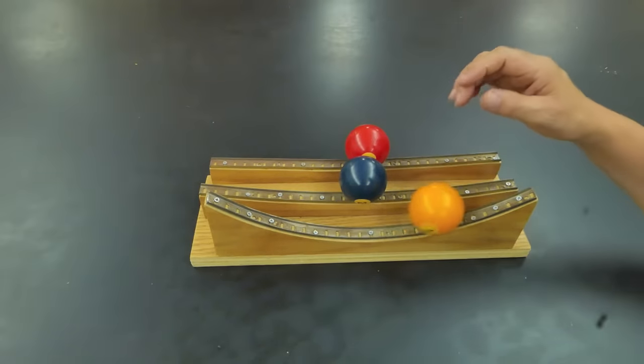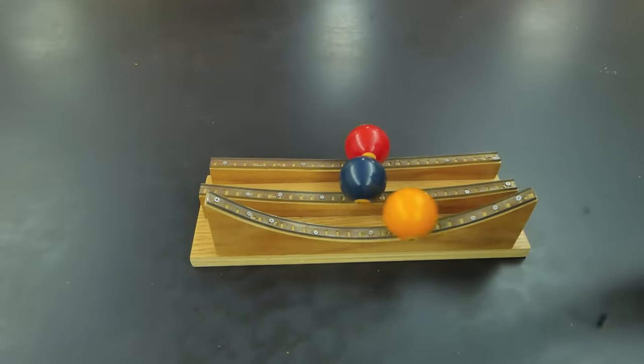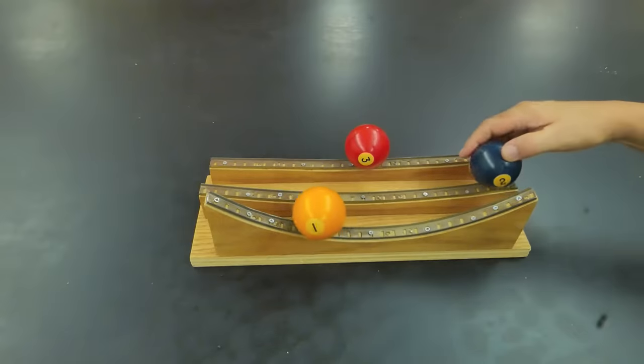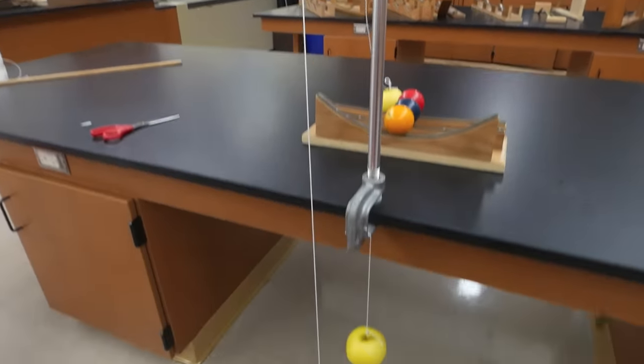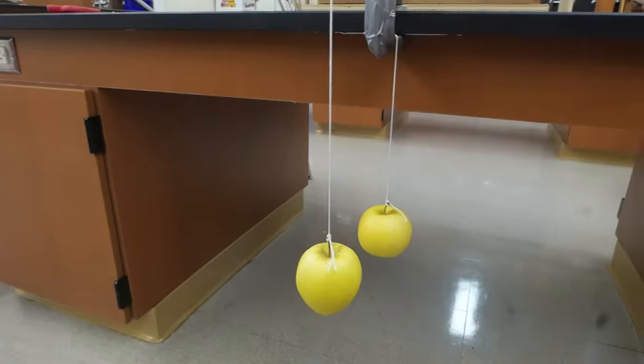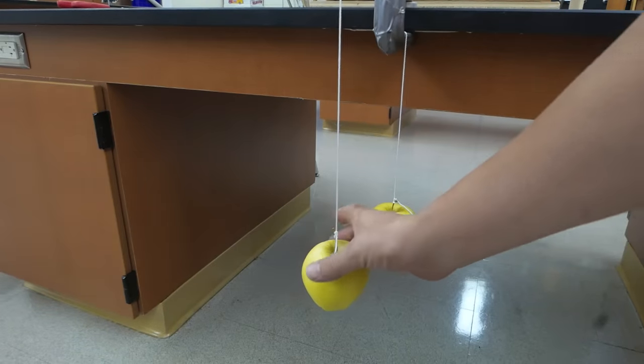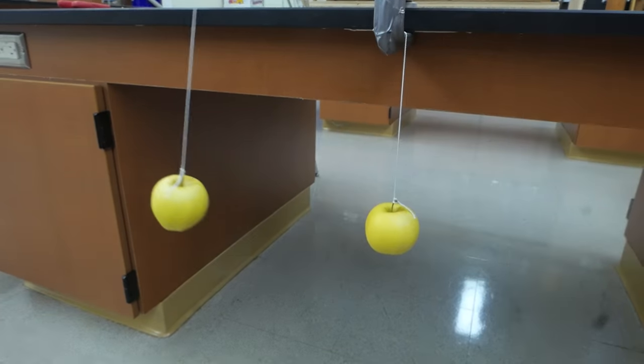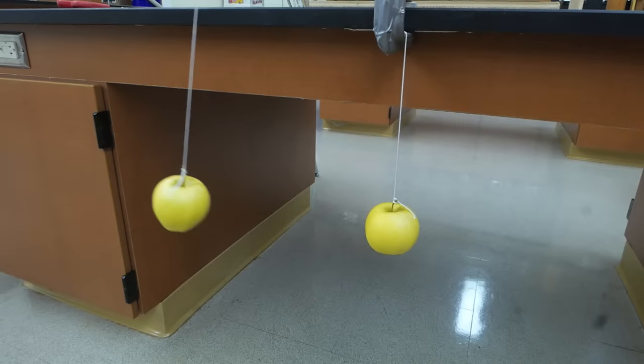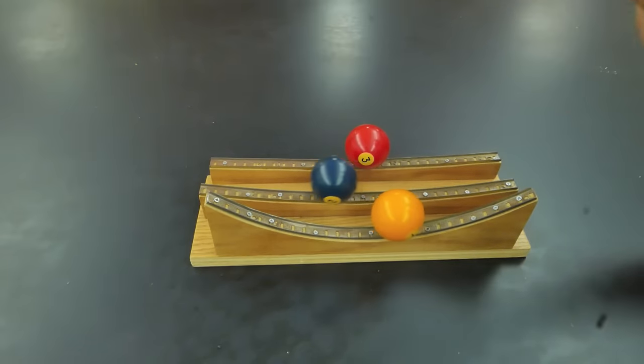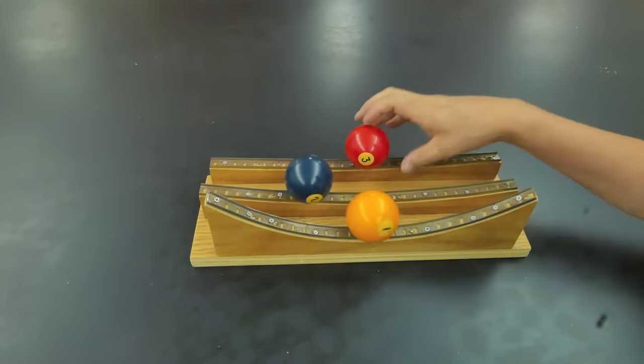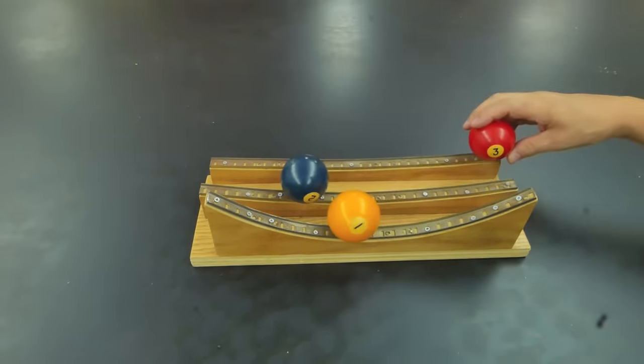This track back here represents a pendulum that would be 99 centimeters long, and it would have a period of two seconds, and the third track back here which is much gentler represents a pendulum that is 222 centimeters long, and it would have a period of three seconds.